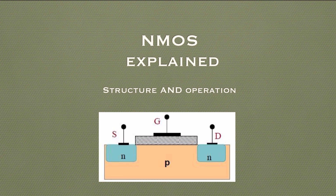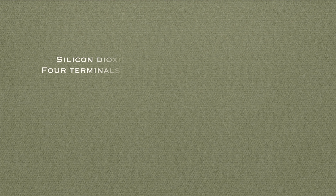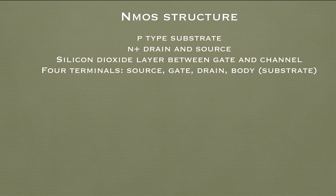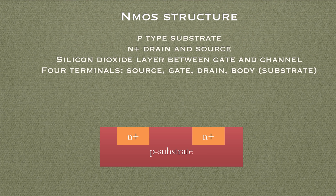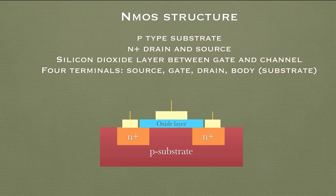Let's get started. Before learning the operation, let's see the structure of the NMOS transistor first. NMOS, which stands for N-channel Metal Oxide Semiconductor, has a P-type substrate and N+ (highly doped) areas of N-type to form the source and drain terminals. There is also a gate terminal separated from this architecture with an oxide layer or silicon dioxide layer, which acts as an insulator. In total there are four terminals: the source, the gate, the drain, and the substrate or body terminal.